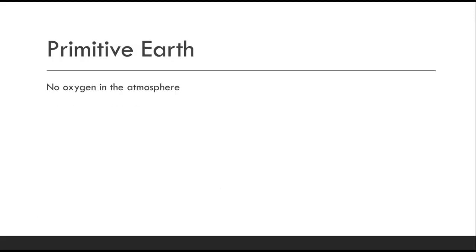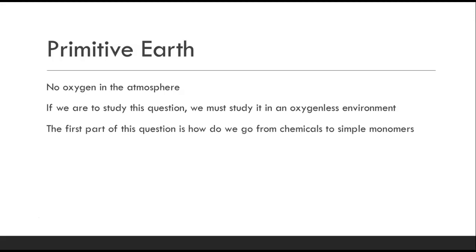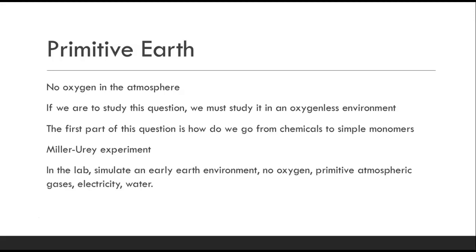What does this primitive Earth look like? If we know that, we can start to figure out how this process happens, because in order for chemical reactions to occur, the environment is very important. We know that there's no oxygen in the atmosphere for a long, long time — until those photosynthetic organisms arrive, which was long after life arrived. So if we are to study the question of how life arrives, we've got to study this in an oxygen-less environment.